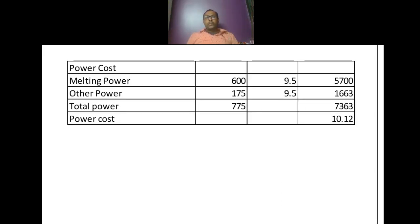This is how it has been calculated. Melting power I have considered here 600 units, other power 175 units — total 775 units per ton of liquid metal — at a rate of Rs 9.50 per unit, giving a total power cost of Rs 10.12 per kg of good casting.